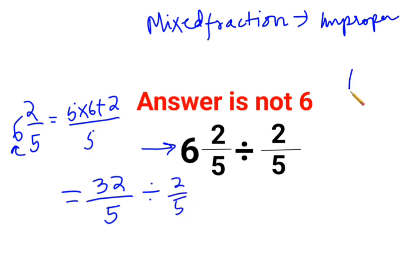Now whenever you have division, you need to follow the rule of KCF, where K stands for keeping the first number as it is, C stands for changing the division sign to multiplication, and F stands for flipping or taking the reciprocal of 2/5, which is 5/2.